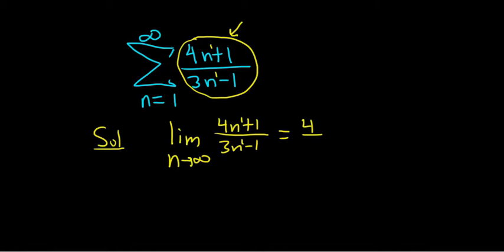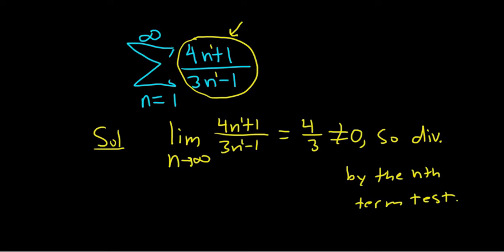So 4 thirds—that's not equal to 0. This diverges; let's put 'div' by the nth term test. It's always really good to write an explanation in words.